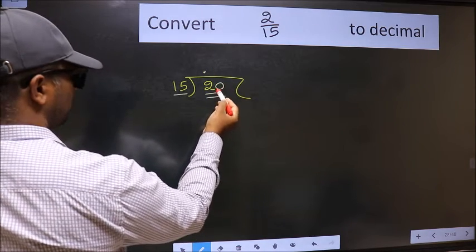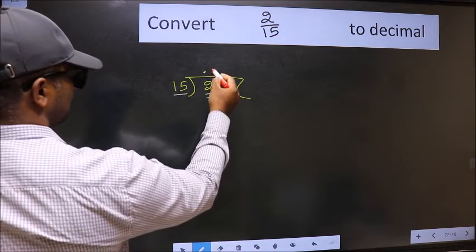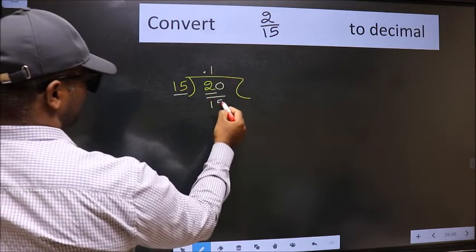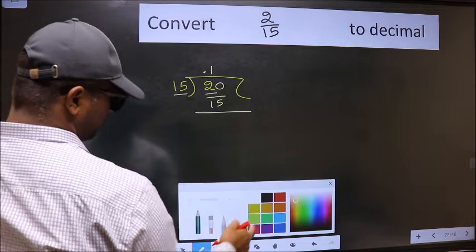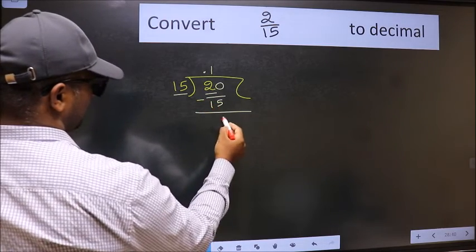So, 20. A number close to 20 in 15 table is 15 once, 15. Now we should subtract. We get 5.